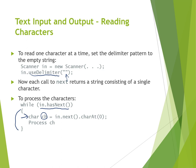Inside the while loop, you assign the next character to a variable of type char called `ch`: `char ch = in.next().charAt(0)`. When you call `in.next()` it returns a string with only one character, and calling `.charAt(0)` on that string returns that single character. After the first line, you simply have the character in the `ch` variable and can do whatever you want with it — print it, put it in another output stream, etc.